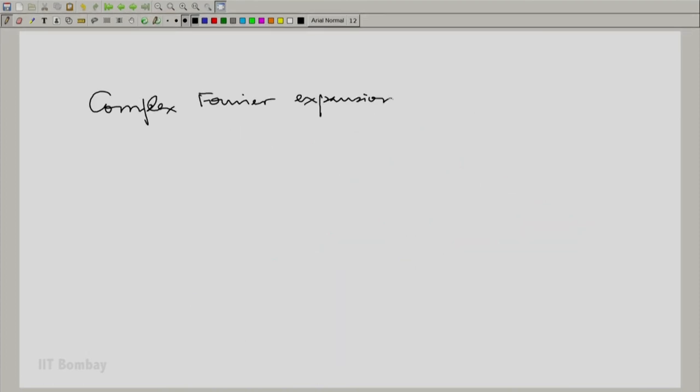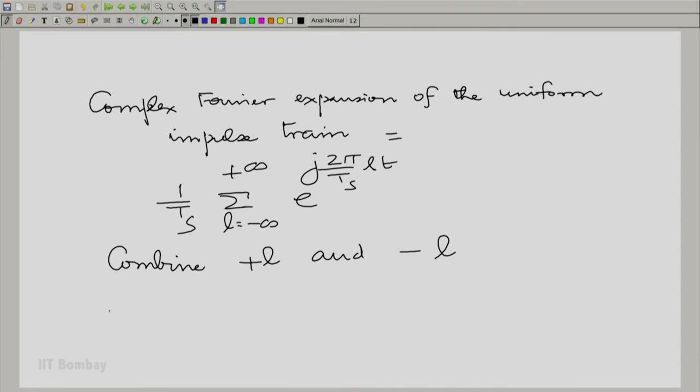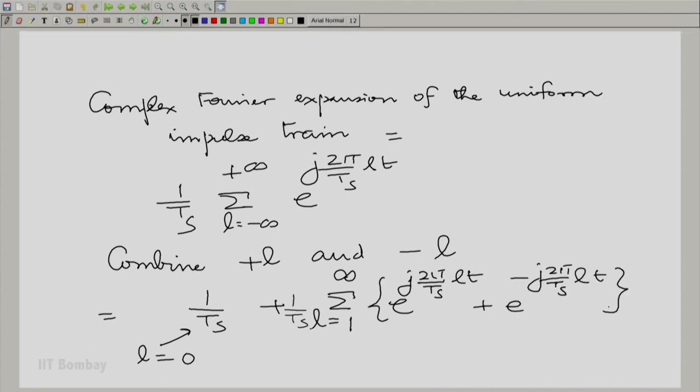So simple. And therefore, the complex Fourier expansion becomes summation gamma_l, but you do not need to write separate gamma_l's because all the gamma_l's are the same. So 1/T_s, as simple as that: 1/T_s summation l going from minus to plus infinity e^(j2π/T_s·l·t). So simple. And now we can combine positive and negative l and rewrite this with l equal to 0 separately. That is 1/T_s for l equal to 0 plus summation l going from 1 to infinity and write the positive and negative. And now this is a very simple expression that you have here. This is simply 2 times cos(2π/T_s·l·t). Very interesting. That is exactly what we had.